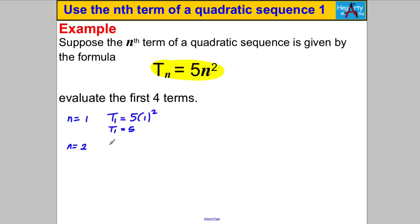Then we're going to make n be 2 so we're going to get ourself T_2 is 5 times 2 squared. Remember you must do the 2 squared first that's 4 times 5 is 20, T_2 is 20. Let's make n be 3, we've got ourself T_3 is 5 times 3 squared, 3 squared is 9, 5 times 9 is 45 so the third term is 45.